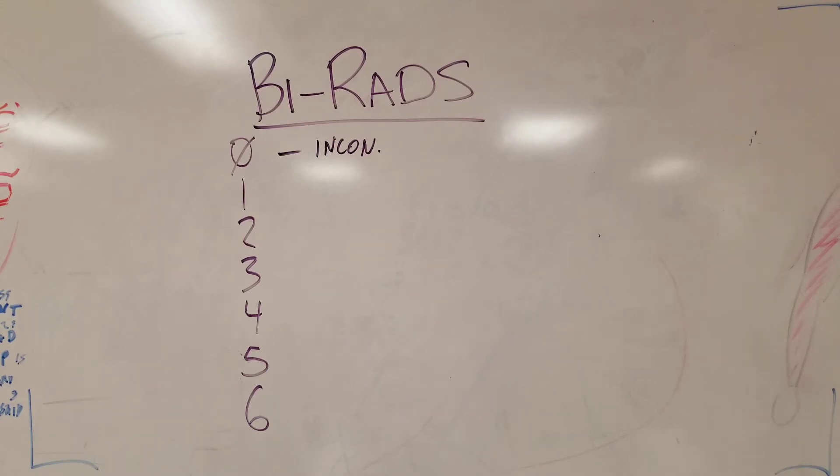On the other side of the spectrum, we have number six, which is known cancer. We're going to start on the outsides and work our way in because this is easy to memorize. Zero is inconclusive and six is known cancer. It's super easy to memorize—you just work your way in from each side.